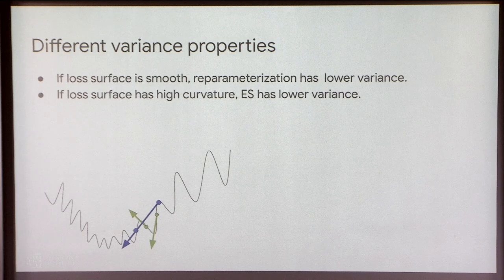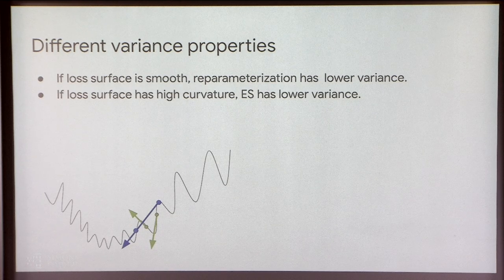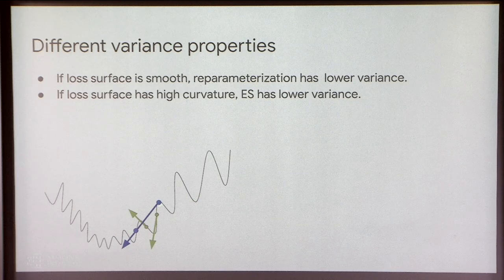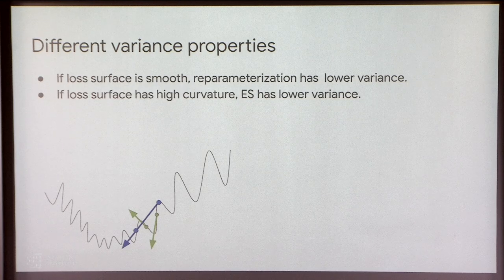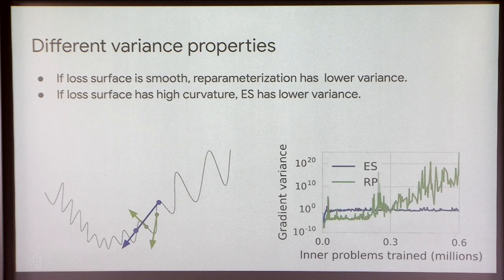If the loss surface is smooth and well-behaved, the reparameterization-style gradient will have much lower variance. On the other hand, if the loss surface has high curvature or a lot of stochasticity, the ES-style gradient estimator is going to be far better. As a simple illustration: if you have a highly oscillatory loss surface, the ES-style estimator effectively takes a finite difference of widely separated points, giving you a low-variance gradient estimator. Meanwhile the reparameterization trick samples a bunch of points, computes the gradient at each, and averages — so if the gradients have a lot of high-frequency noise, it gives a very high-variance estimator.